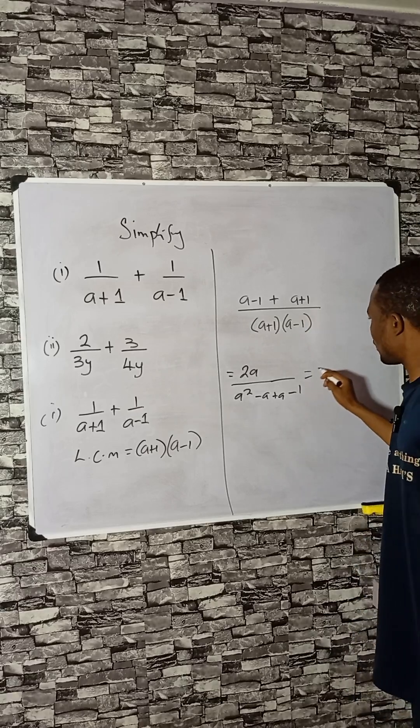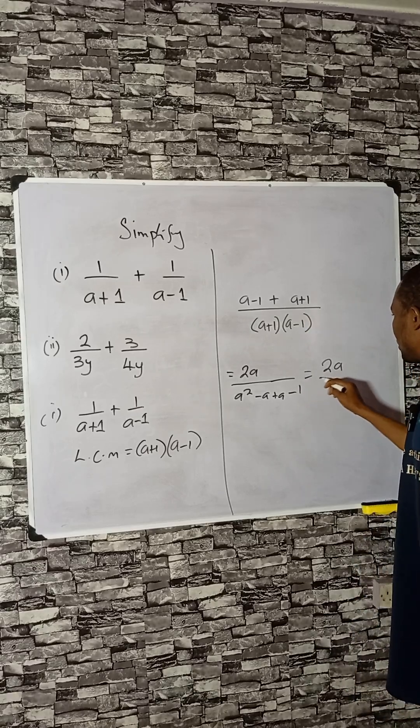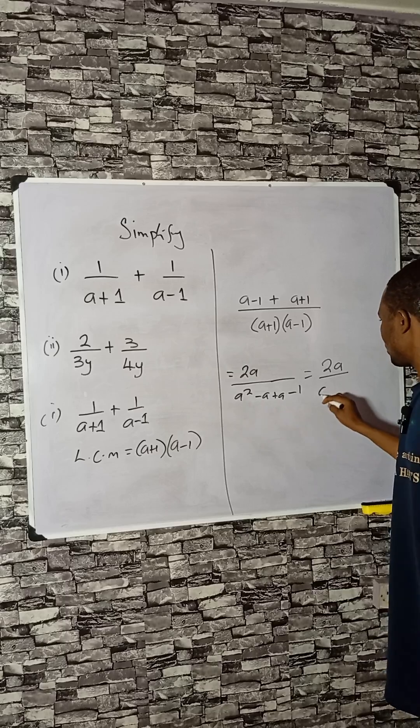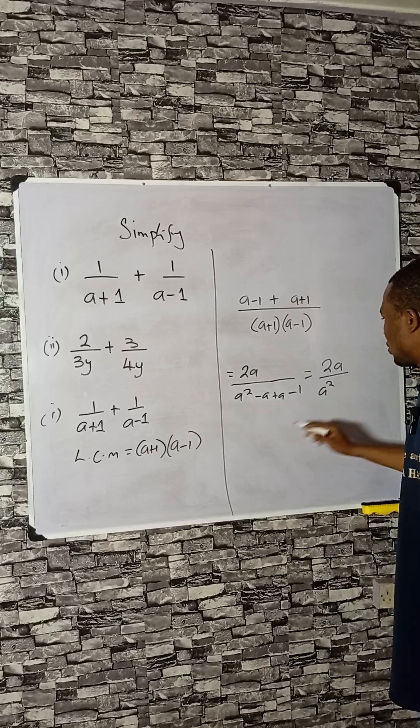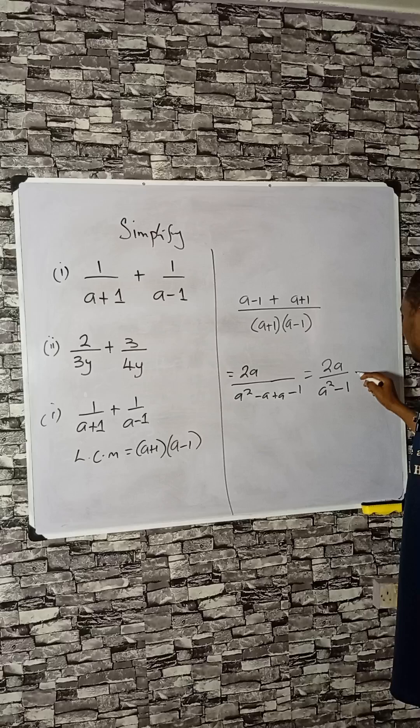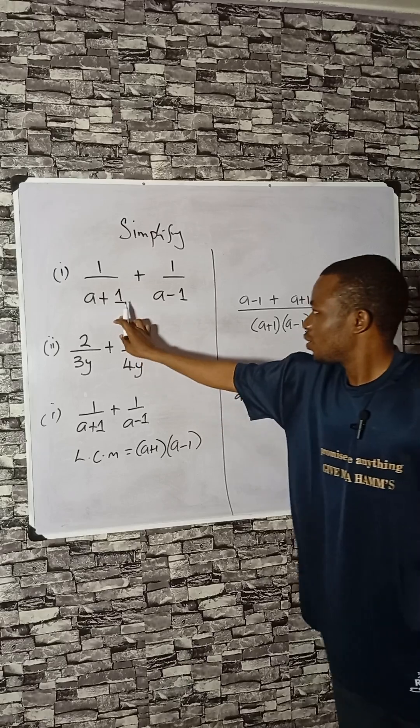So you have this as 2a divided by a squared, minus a plus a is zero, minus 1. This is the answer for the first one.